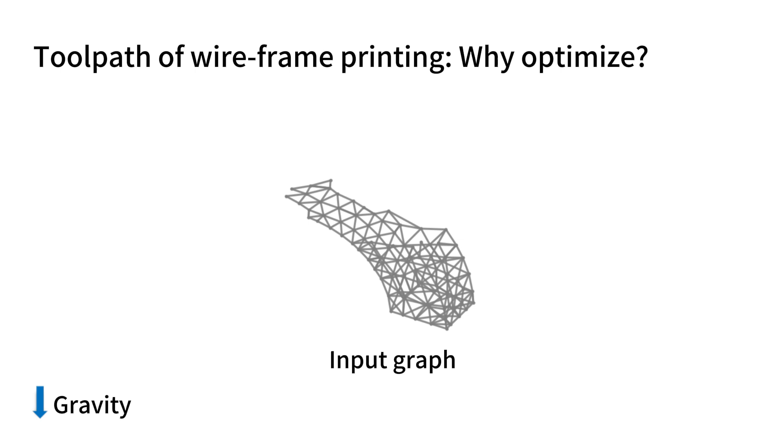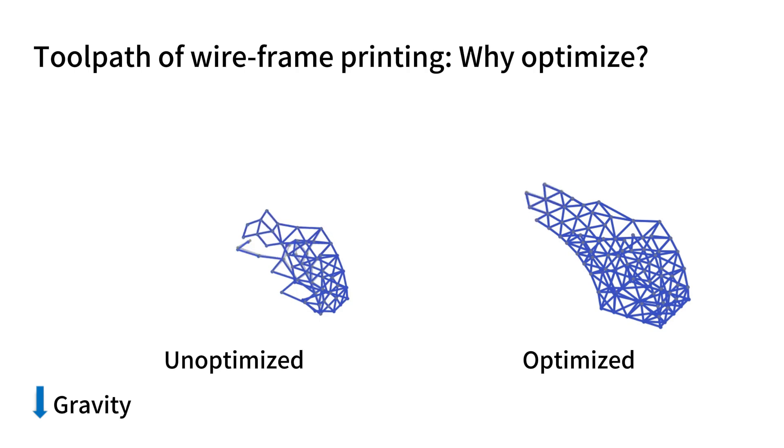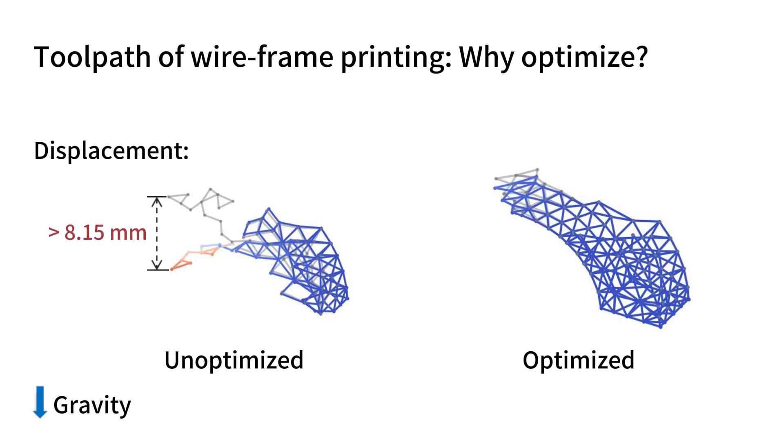Here we use wireframe printing as an example. Different printing toolpaths will lead to different deformation on the in-process structure caused by gravity. Very large displacement can be formed when using the unoptimized path for printing. As a consequence, the printing process will fail.